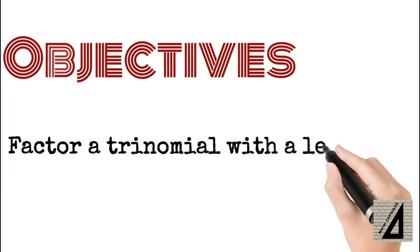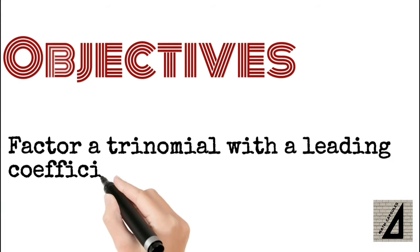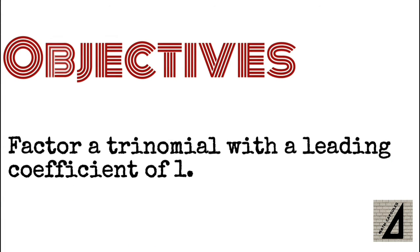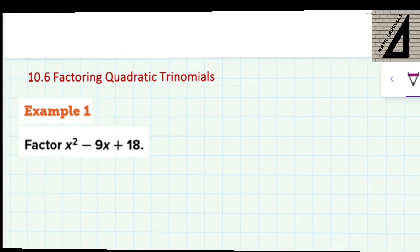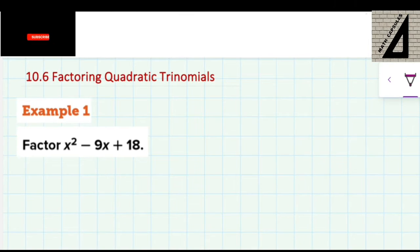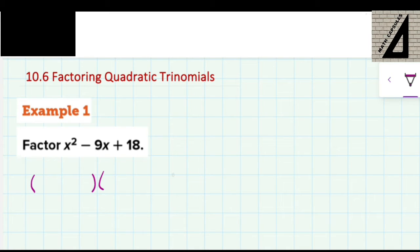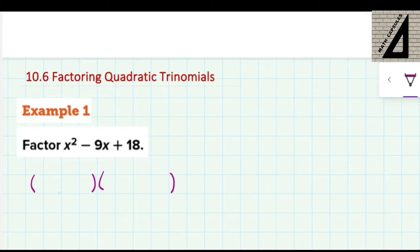Our objective in this lesson is to factor a trinomial with a leading coefficient of 1. In order to factor quadratic trinomials, I need to find two brackets where each bracket, when multiplied by the other one, gives the same trinomial.